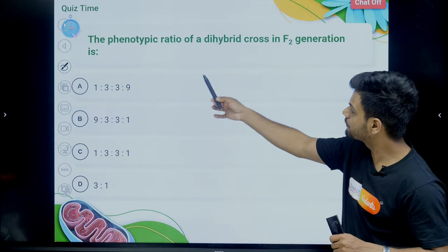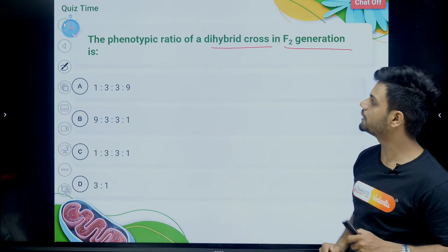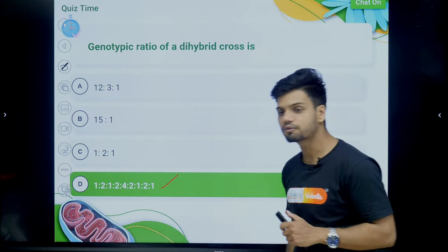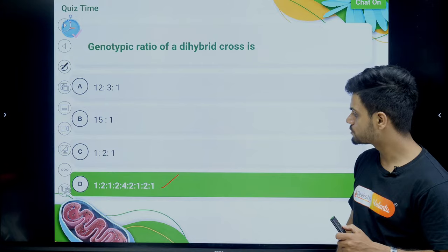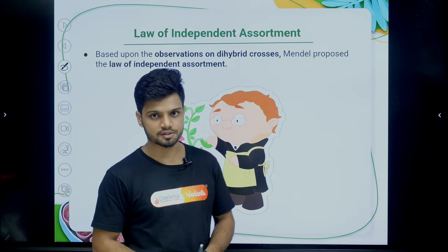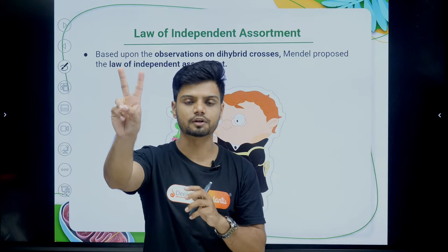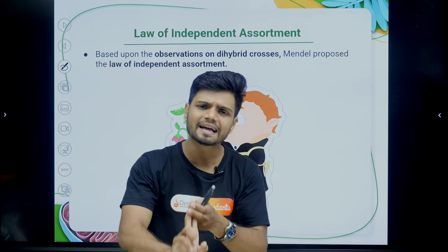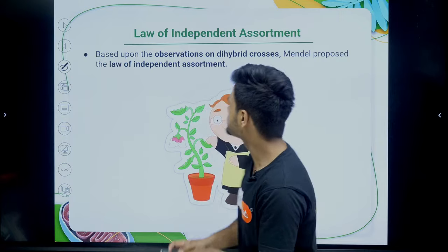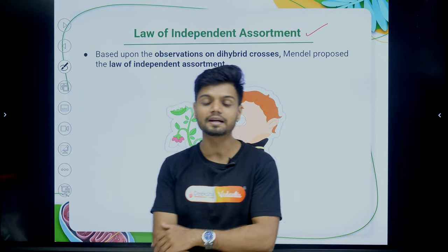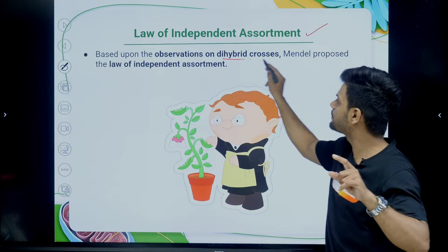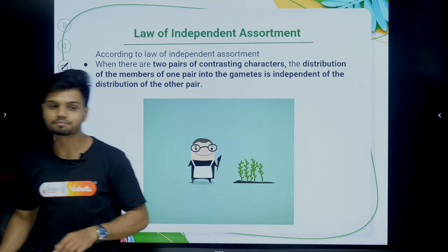The phenotypic ratio of dihybrid cross in F2 generation is 9 is to 3 is to 3 is to 1. Based on the monohybrid cross we learnt the law of dominance and law of segregation. Based on the dihybrid cross there is one law — the law of independent assortment. Based upon the observation on dihybrid cross, Mendel proposed the law of independent assortment.